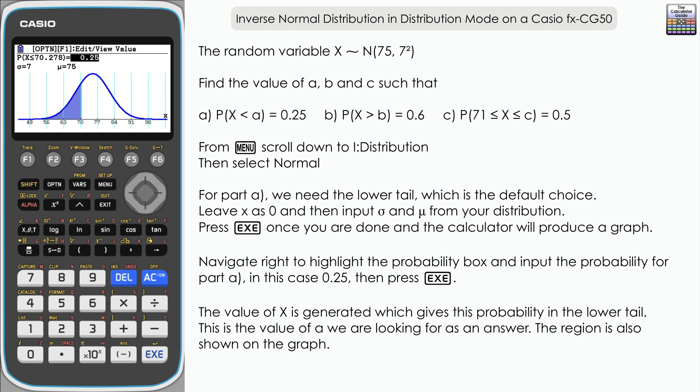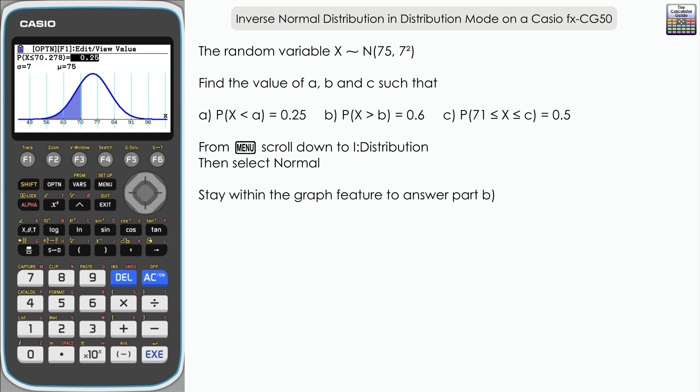Staying within the graph feature to answer part B, we need to find the probability where X is greater than B equaling 0.6. We need to change the tail for this, so press option and then press F4 to select the upper tail.